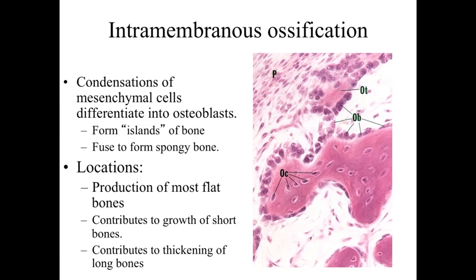In intramembranous ossification, condensations of mesenchymal cells — primitive connective tissue cells — cluster together and differentiate into osteoblasts, the bone-builder cells. Little islands of bone form, and the osteoblasts on the outside of these structures expand them via appositional growth. As these islands grow closer to one another, they may merge and fuse together to form spongy bone, forming trabeculae and spicules — that open structure within the bone formation.